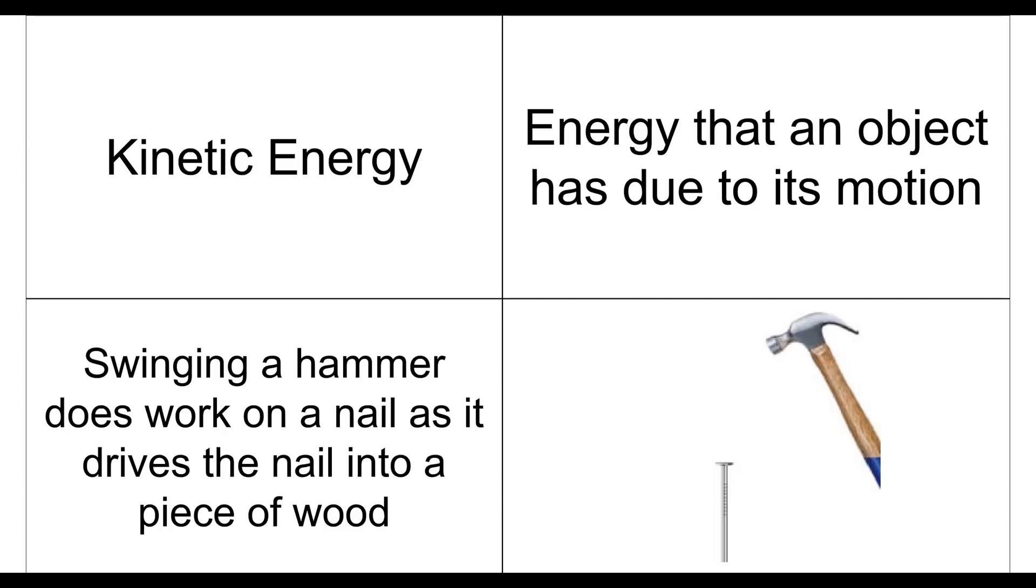Swinging a hammer does work on a nail as it drives the nail into a piece of wood. So if we have this hammer we have here moving down and striking onto this nail here, and then that nail is going to then now move into the wood or whatever surface that we are trying to nail it into. And so this hammer is going to have kinetic energy as we swing it down.